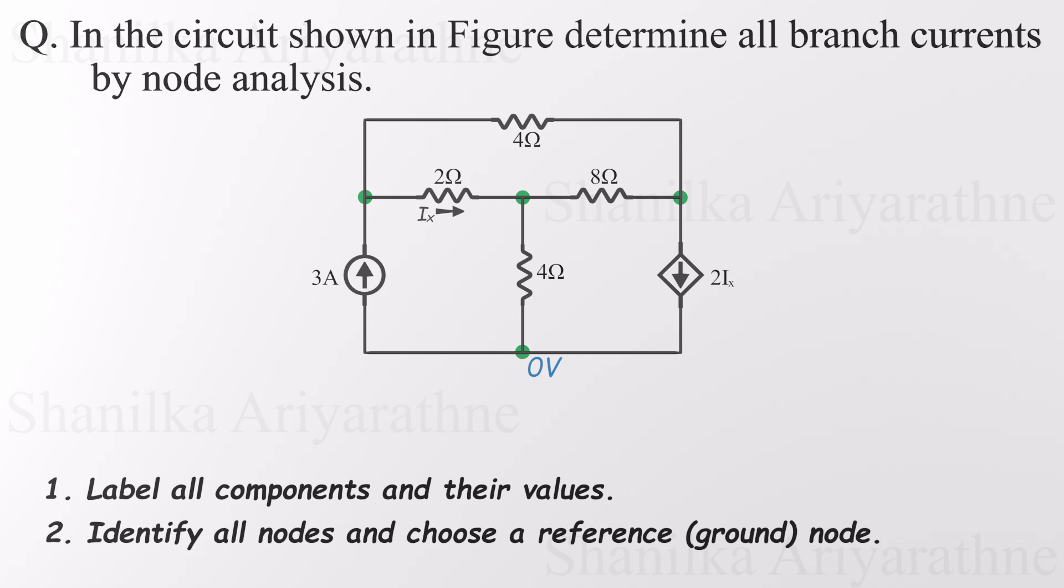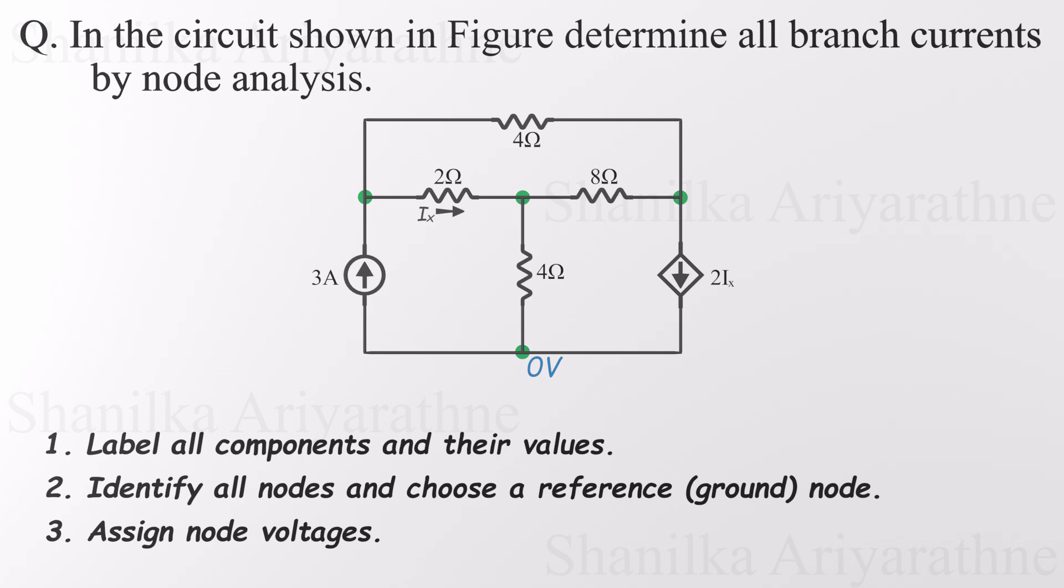The next step is to assign voltages to other nodes. If we had any voltage sources directly connected to the reference node, we'd use those to label node voltages right away. But in this circuit, there aren't any voltage sources, just current sources. So we'll define the node voltages ourselves. Let's label the remaining nodes as V1, V2, and V3. These represent the voltage at each node relative to ground. With all node voltages labeled and ready to go, we're all set for the next step.